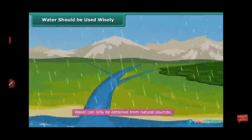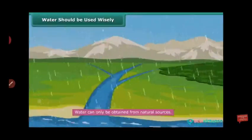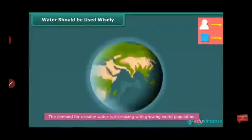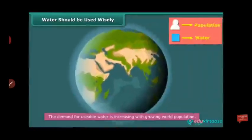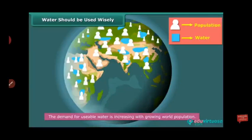Water can only be obtained from natural sources, so rainwater has to be used wisely. It can be stored and recycled. Very little water is available for plants, animals, and human beings. With the growing world population, the demand for usable water has increased, so we have to save water for the next generation.